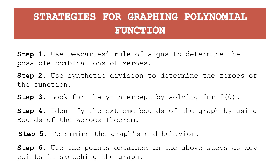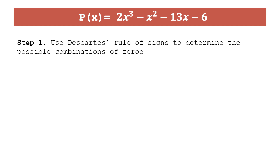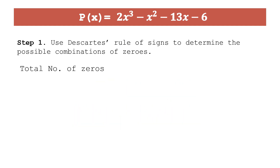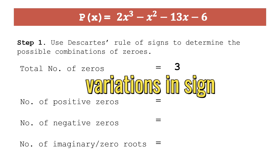Let's begin with step one. Given the polynomial function, we will use Descartes' Rule of Signs to determine the possible combinations of zeros. First, let's identify the total number of zeros. The highest exponent is three, meaning the degree is three — this is called a cubic function — so the total number of zeros is three. Now let's identify how many are positive, negative, or imaginary zeros.